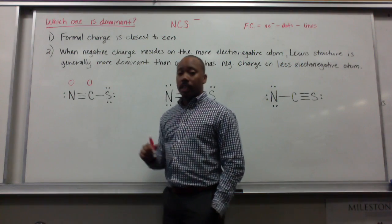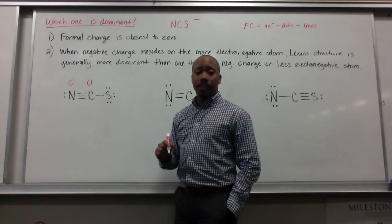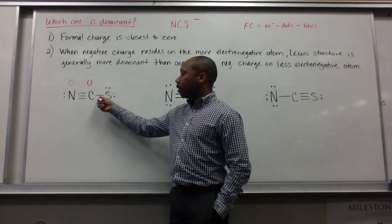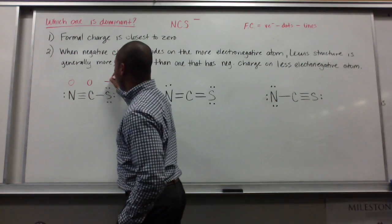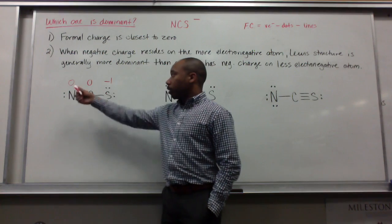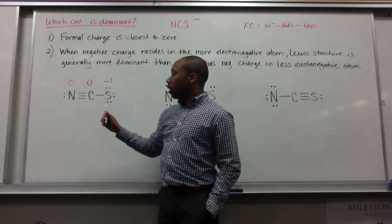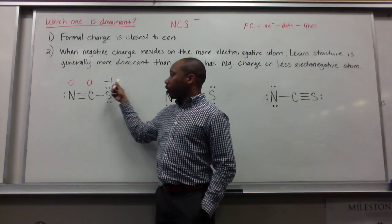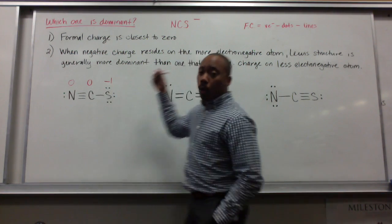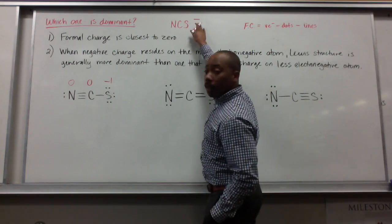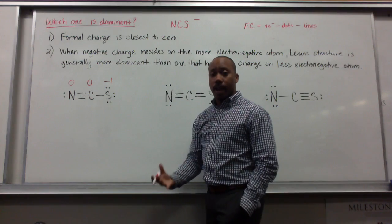Sulfur has six valence electrons minus six dots — six minus six is zero — minus one line, giving negative one. So we have a lot of zeros, which is good; that's close to being dominant. The sum of all formal charges — zero plus zero plus negative one — should equal the overall charge of the ion we started with. That's one way to check your answer.